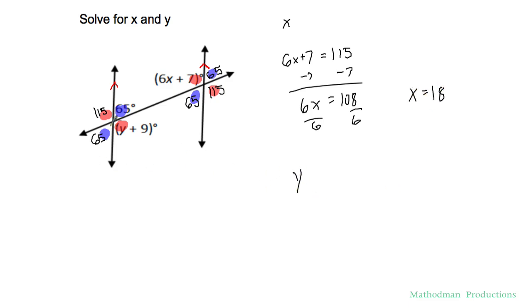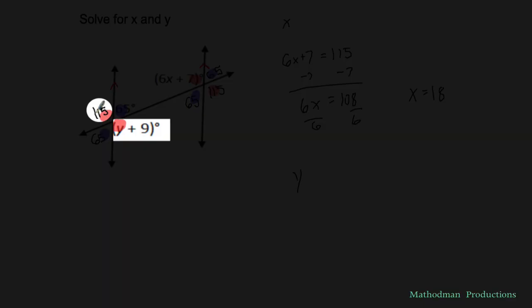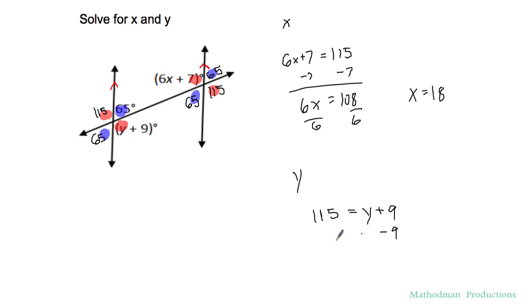Solving for y same color as well. 115 equals y plus 9. Fun step equation. Subtract 9 to both sides and you got y equal to 106.